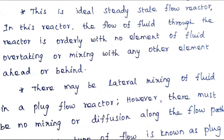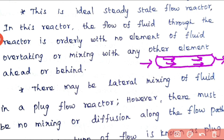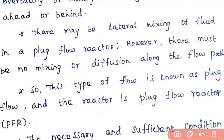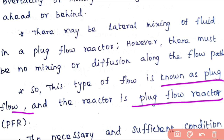This reactor is known as an ideal steady state flow reactor. The flow of fluid through the reactor is orderly, with no element of fluid overtaking or mixing with any other element ahead or behind. There may be lateral mixing of fluid in a plug flow reactor, but there must be no mixing or diffusion along the flow path. This type of flow is known as plug flow.